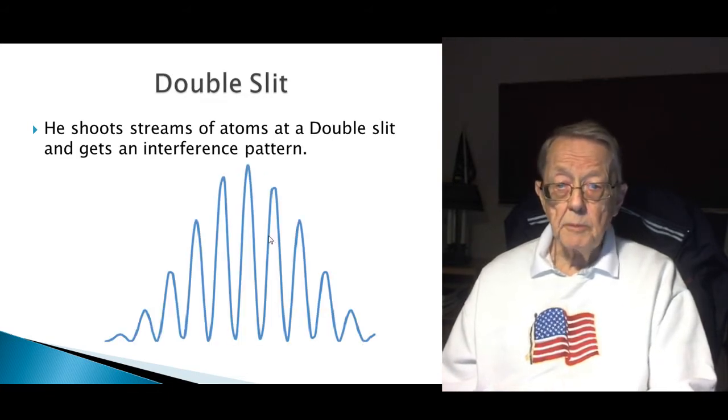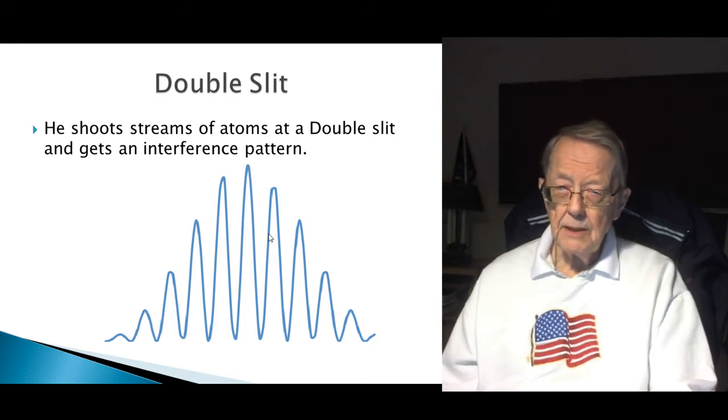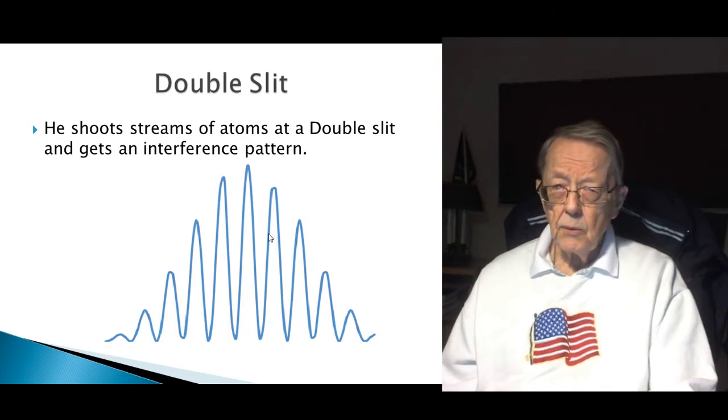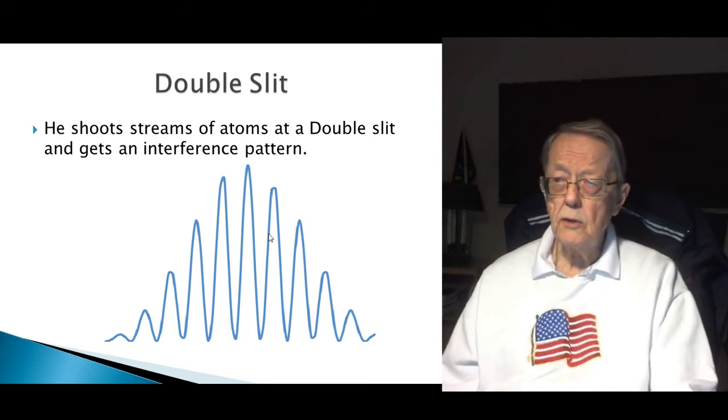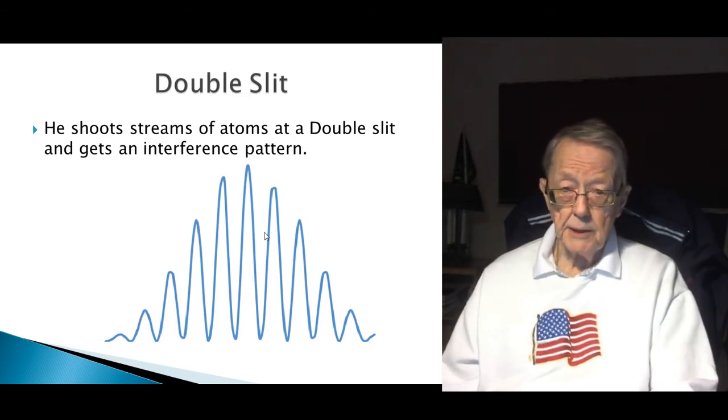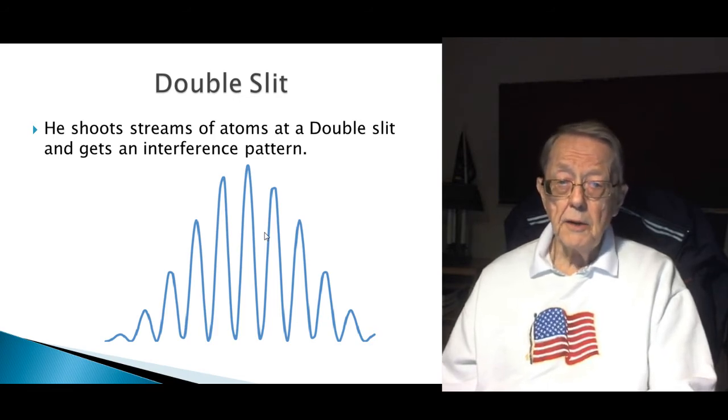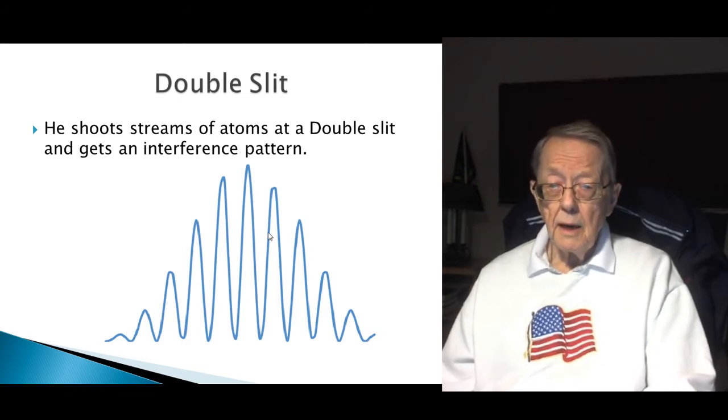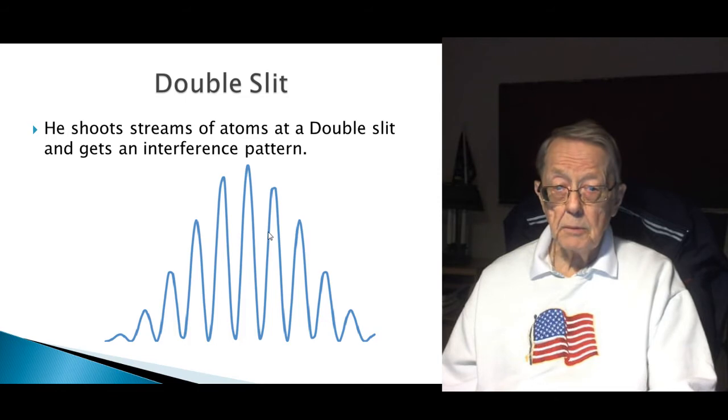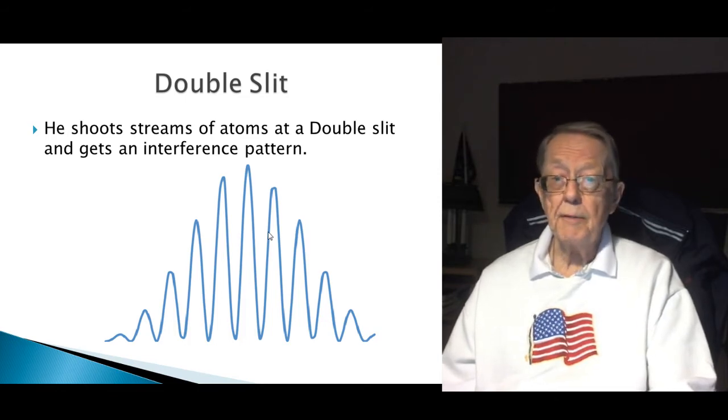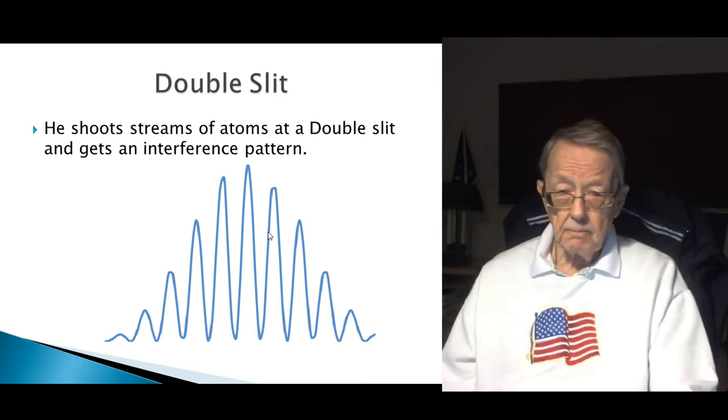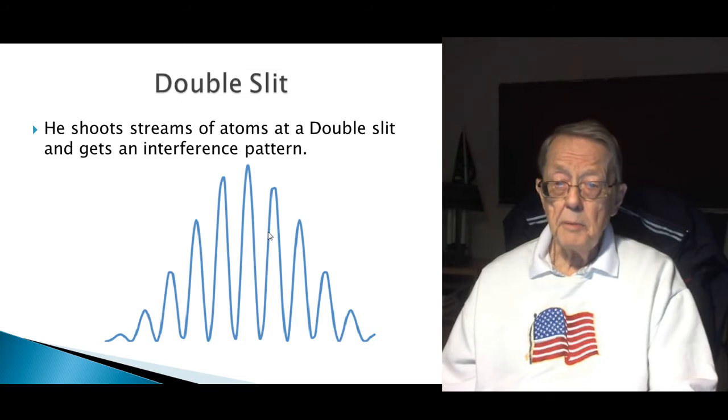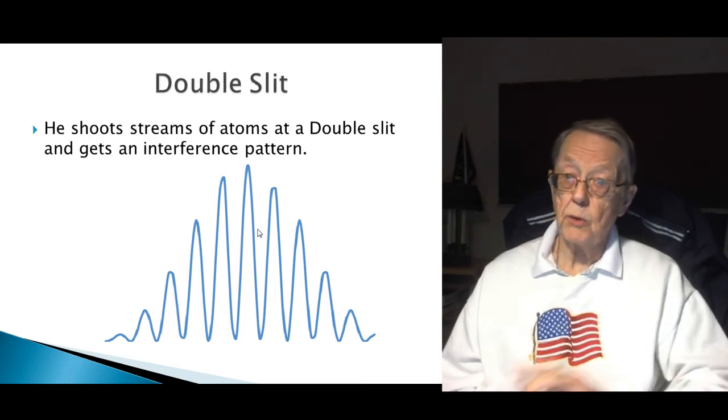Then he shoots streams of atoms at a double slit and he gets an interference pattern. Well, you know, that's really not what he expected. He expected two double bars, not a whole interference pattern. When he compares it to his sand flowing through double slits, that's what he was expecting. So this is not what you expect. So he talks about the fact that maybe the atom sees the screen, sees the double slit, and then behaves in a different way. Maybe there's forces there. Maybe the atom splits in two.